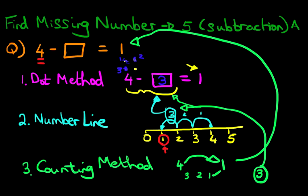Now all of these methods, the dot method, the number line and the counting method, the principles are the same. We're going from 4 to 1. How many do we need to get from 4 to 1? The answer is 3.